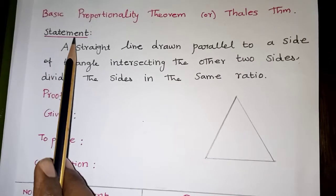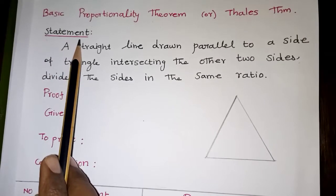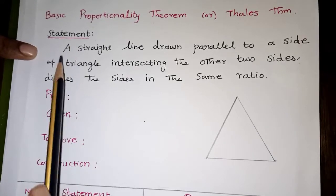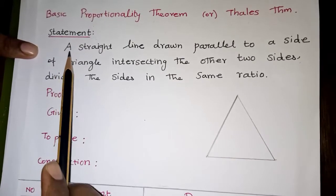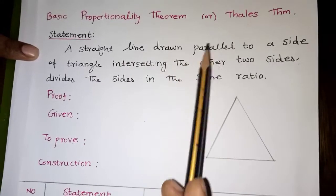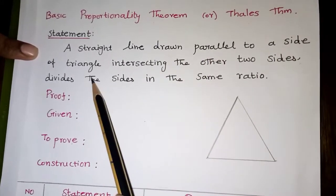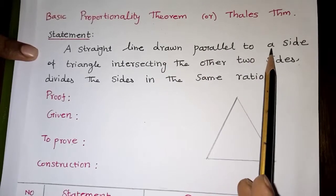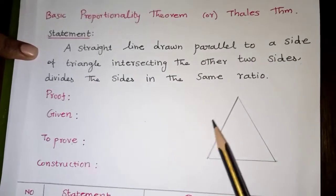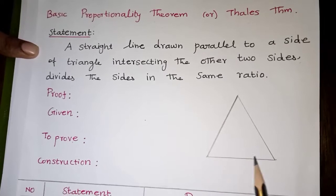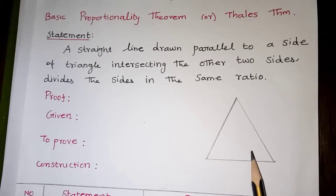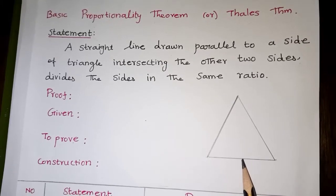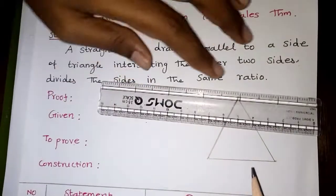The first statement: if you are asked a statement, it is compulsory and carries 2 marks. A straight line drawn parallel to a side of a triangle divides the other two sides proportionally. You can draw a parallel side of a triangle by blocking one side.